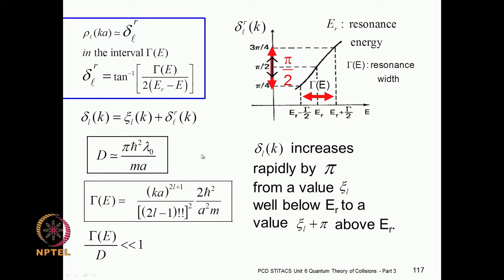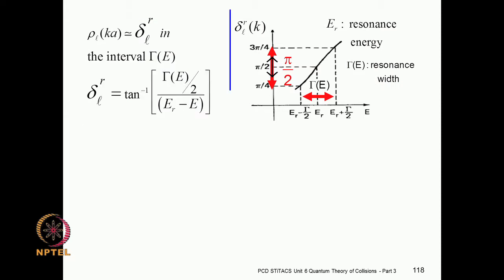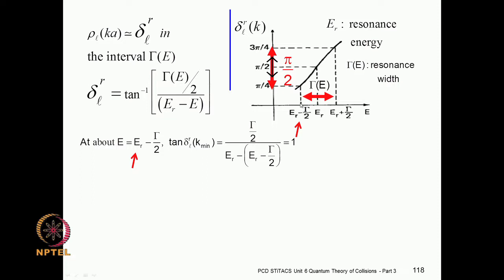These resonances appear as spikes — sharp variations in the cross section — because the widths are small compared to the spacing between resonances, which is the distance between adjacent asymptotes discussed in the previous class. Let us now examine the figure closely. There are two points of significant interest: E_r − Gamma/2 (half Gamma below the resonance) and E_r + Gamma/2 (half Gamma above the resonance).